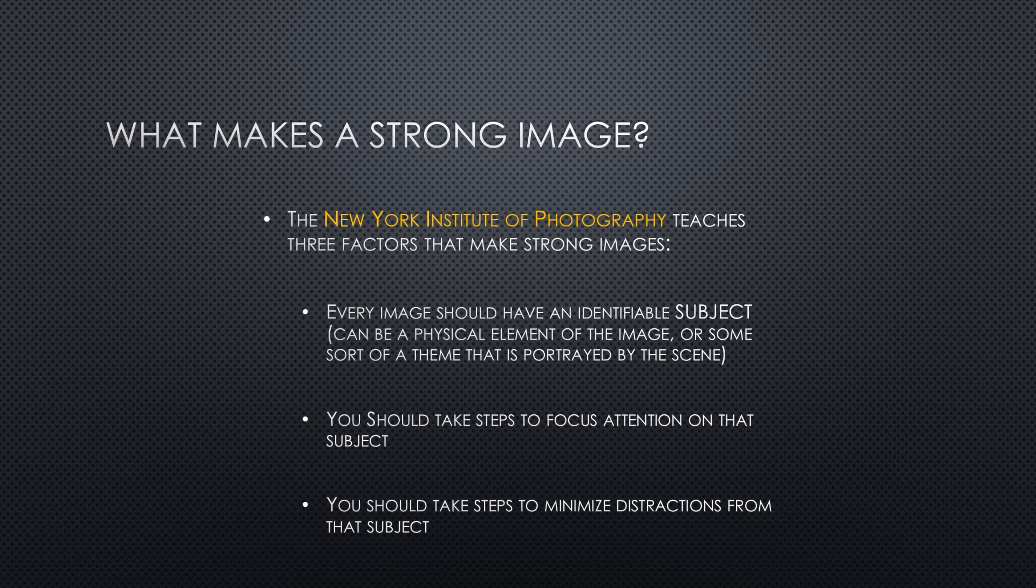Before we do that, though, just a quick reminder looking at the characteristics that make up a strong image. We talked about this last week. The New York Institute of Photography teaches that there are three factors that make up strong images. Every image should have a clear and identifiable subject. That subject does not need to be a physical object that you can point to and say that is the subject. It doesn't need to be a cardinal in a tree or a fashion model in a studio or a race car going down the track. It doesn't need to be that concrete. It can be as simple as an emotion. The theme might be love or the theme might be fear, but it should have some sort of subject that we are looking at.